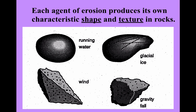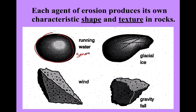Each of the agents of erosion produces its own characteristic shape or texture within rocks or in sediment. We'll go over these more as we get into each one, but there are some things to note. Running water produces a nice smooth surface — it's going to smooth and round out sediment. Glacial ice produces parallel grooves or striations, and may also polish rock.